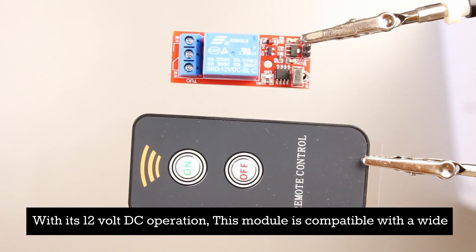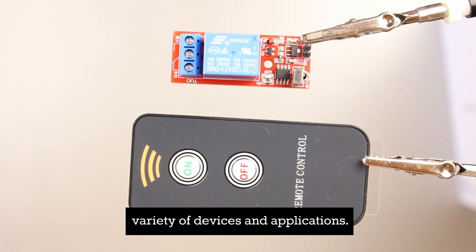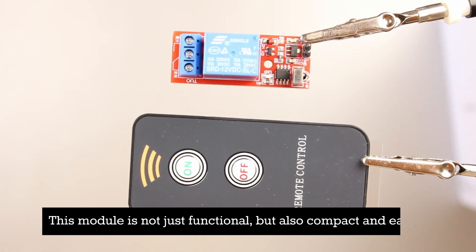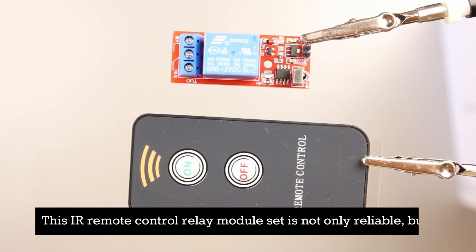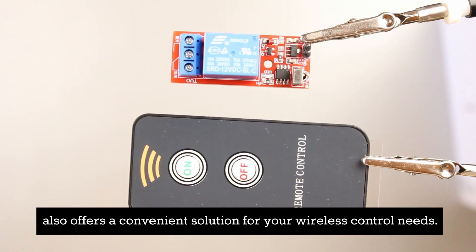With its 12 volt DC operation, this module is compatible with a wide variety of devices and applications. This module is not just functional but also compact and easy to integrate in your project. This IR remote control relay module set is not only reliable but it also offers a convenient solution for your wireless control needs.